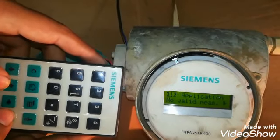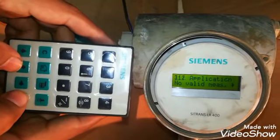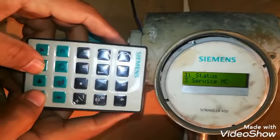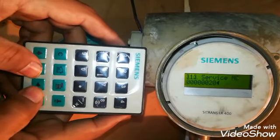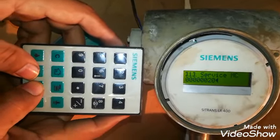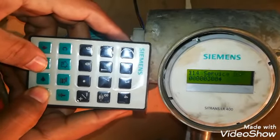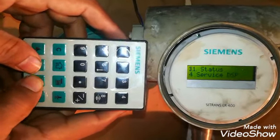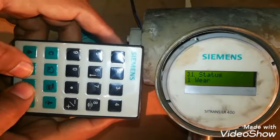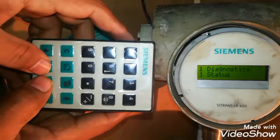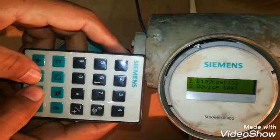Second is the application. In application, no valid measurement. Third is the service MC. This is the service MC of this level transmitter. This is the service DSP. So these are the diagnostic parameters in this diagnostic block.